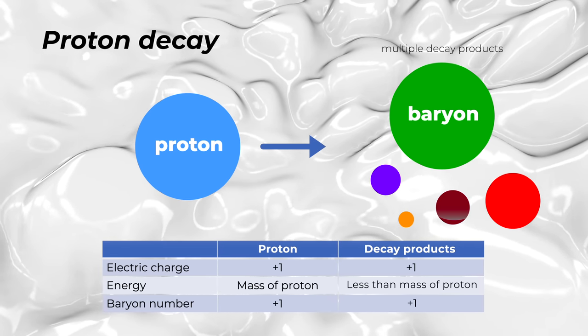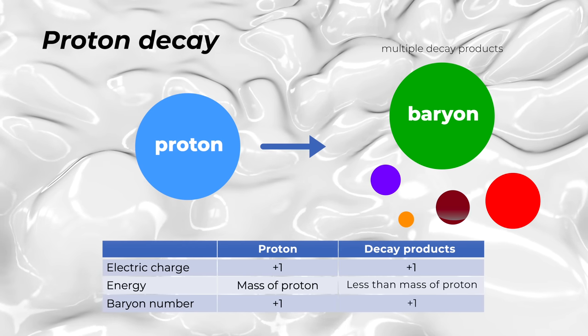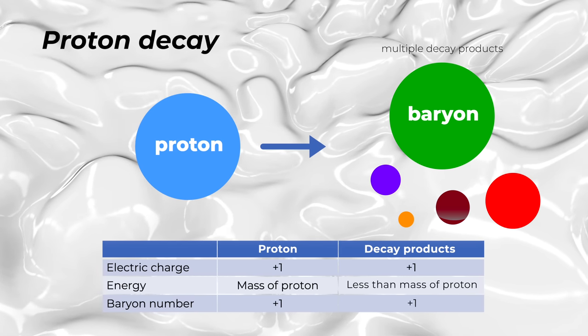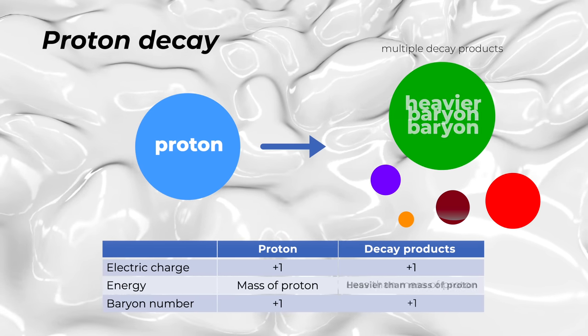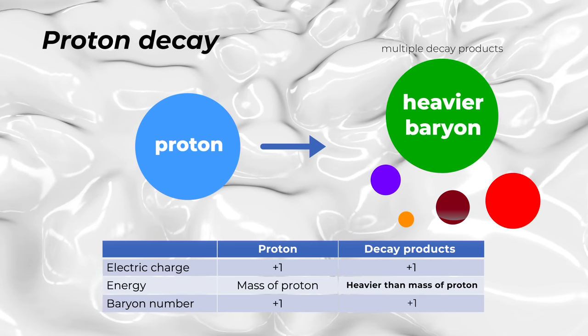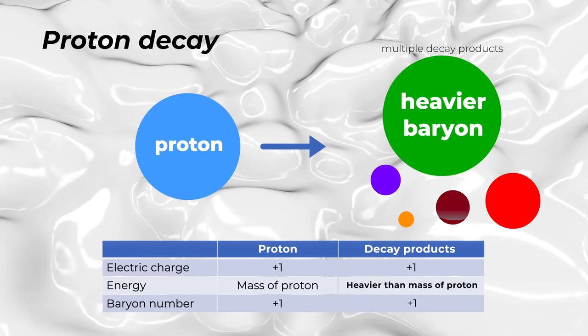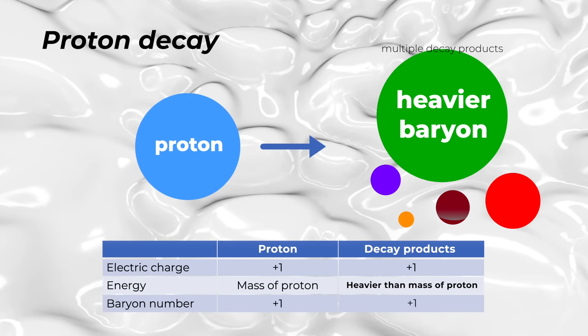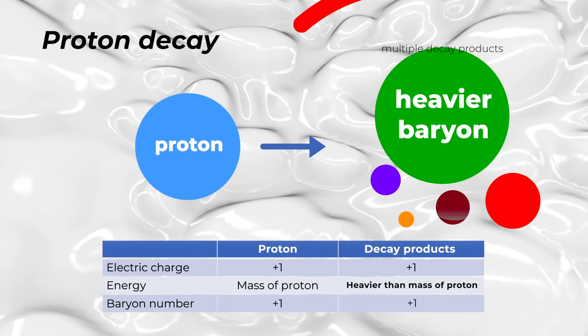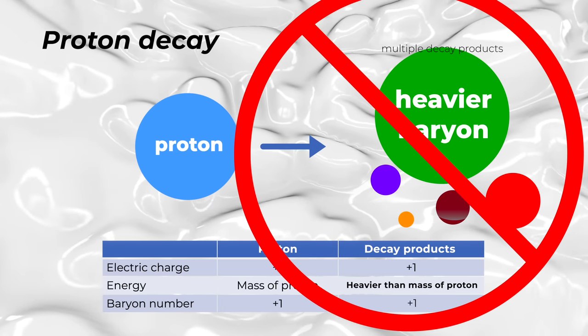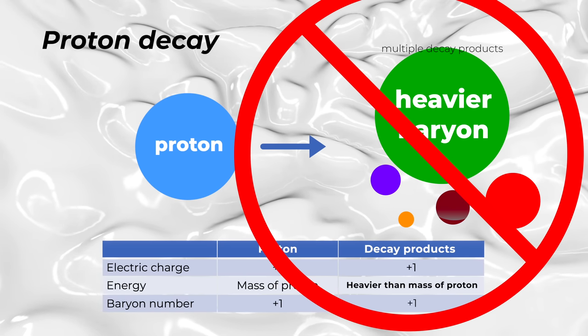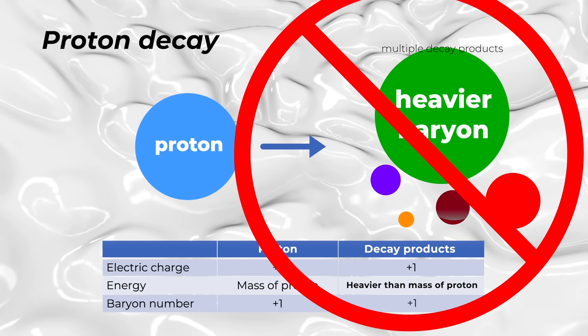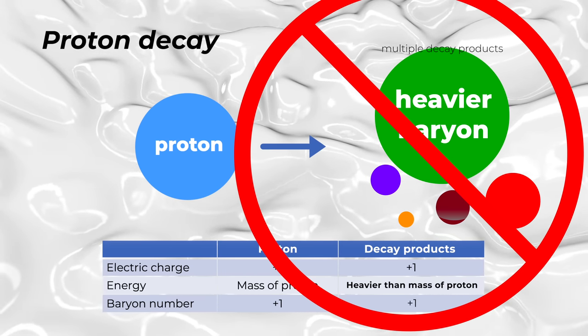But here's the problem. The proton is the lightest baryon, thus any other baryon into which it would decay would be heavier than the proton, and that would violate energy conservation. Therefore, because there is no way for a proton to decay into another baryon of higher mass, protons can't decay into another baryon. And, coming full circle, according to the standard model, the proton is therefore stable. That's it. The end.